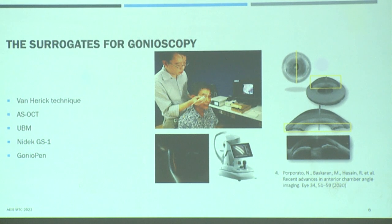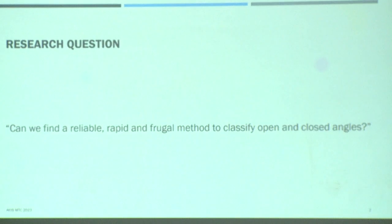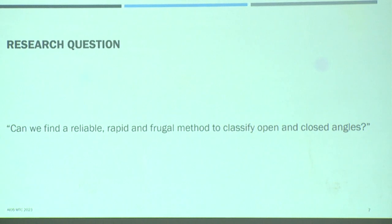The Van Herrick technique, the ASOCT, the UBM, or even the gonio pen that has come out — none of these are very easy to perform. So our research question was: can we find a reliable, rapid, and frugal method to classify open and closed angle glaucoma in all situations?